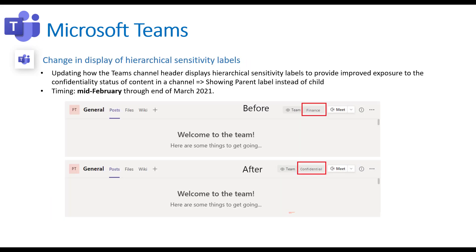This one I didn't even know existed. You can ignore this if you're not using AIP labels as your information protection labels, but it's part of certain business plans, especially Business Premium. They're changing the format of the tag shown in Teams channels. Any files with a sensitivity label tag will display the parent tag or label instead of the child. For example, "Confidential" is the parent and "Finance" is the child underneath it. You can have many nested labels for your taxonomy. So it's giving the high-level category instead of the unique child. This is coming mid-February through end of March.